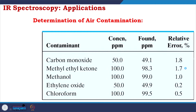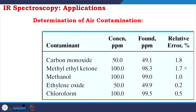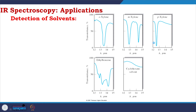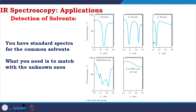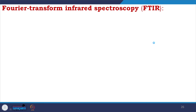For air contamination determination, compounds like carbon monoxide, methyl ethyl ketone, methanol, ethylene oxide, and chloroform can be detected with concentration in ppm. For solvent identification, characteristic spectra of ortho-xylene, meta-xylene, para-xylene, ethylbenzene, and cyclohexane are in a standard library; when a new unknown sample comes in, you match its spectrum to the library to determine the solvent.